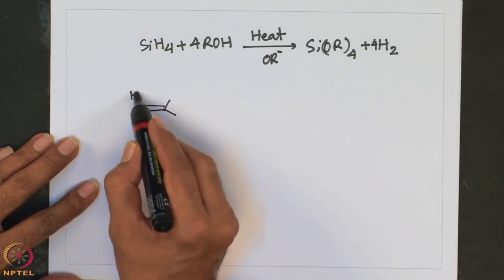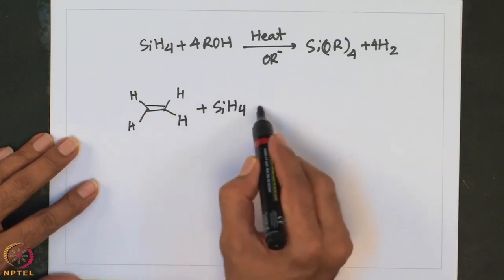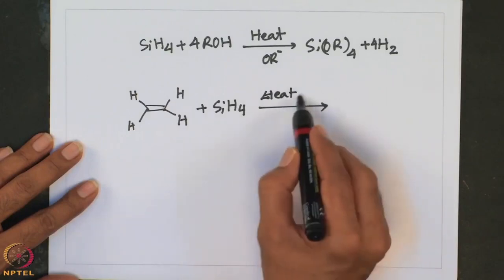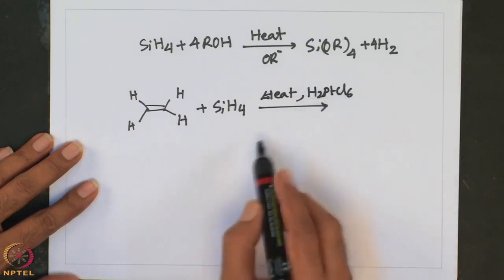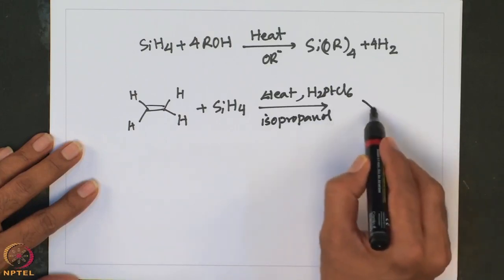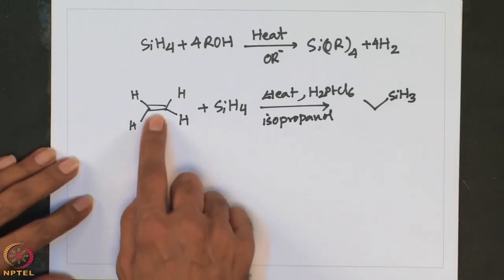In both industry and laboratory synthesis, radical pathways are essentially followed. In practice, it is usually performed under far milder conditions provided a metal complex is used as a catalyst. For example, a typical olefin such as ethylene, when treated with SiH4 in the presence of a catalyst such as platinic acid in isopropanol as solvent, undergoes hydrosilylation — addition across the double bond.